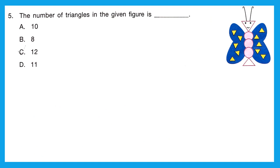Question 5: 'The number of triangles in the given figure is?' Let's find the triangles — one is the head, one is the tail, and the rest are in the wings. Counting all of them: 1, 2, 3, 4, 5, 6, 7, 8, 9, 10, 11, 12. In total we have 12 triangles in this butterfly. The correct option is C, 12.